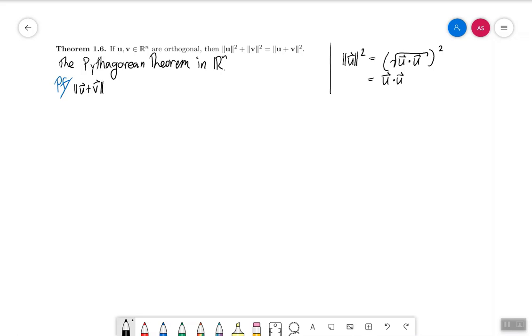Well, the norm of u plus v squared by what I just wrote over on the side is u plus v dotted with u plus v.